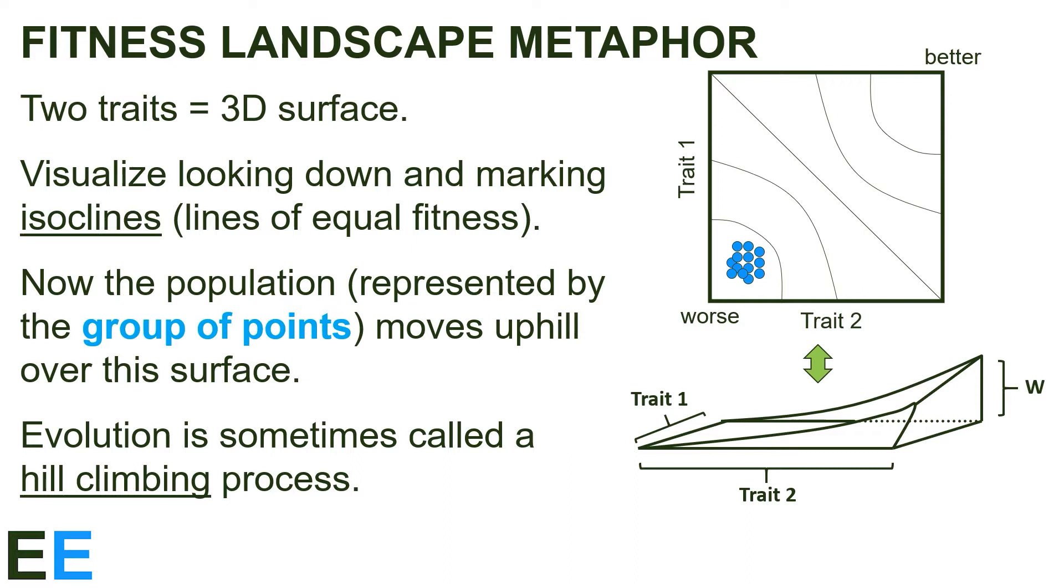The pair of figures show a fitness landscape with the lowest fitness value at the minimum value for traits one and two. The fitness increases as each of the two traits increases. This continues up to a maximum fitness for the maximum values of traits one and two.